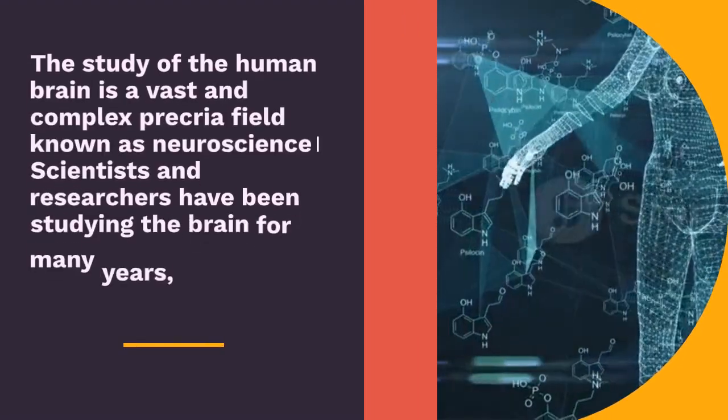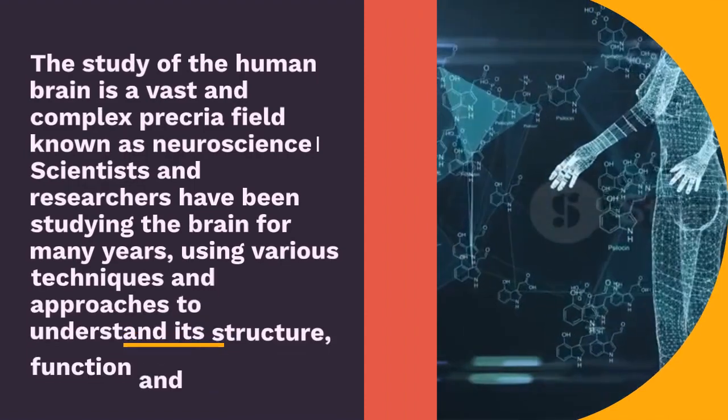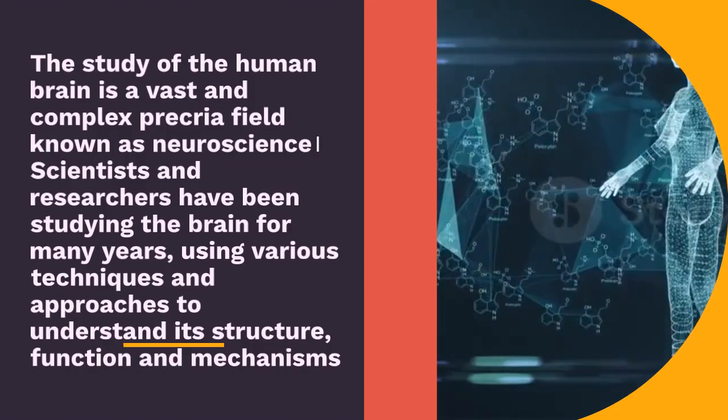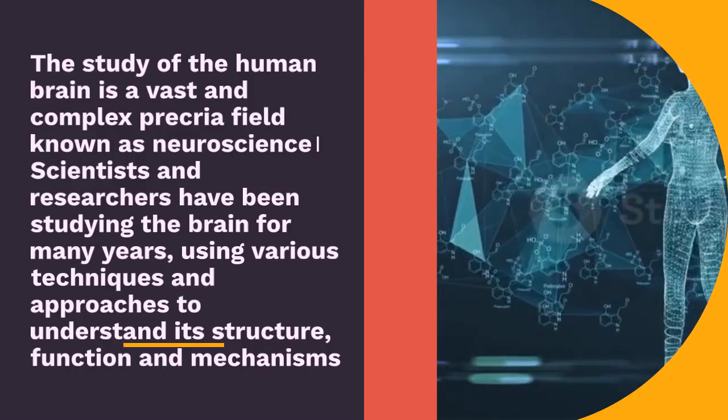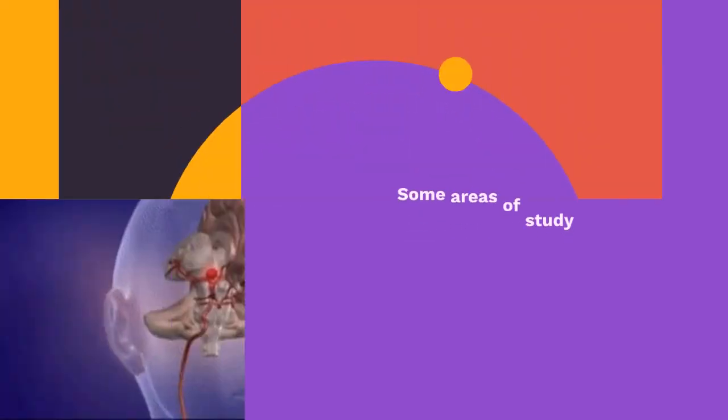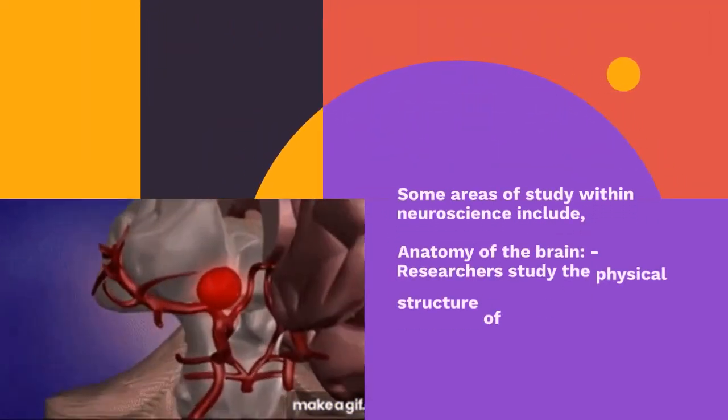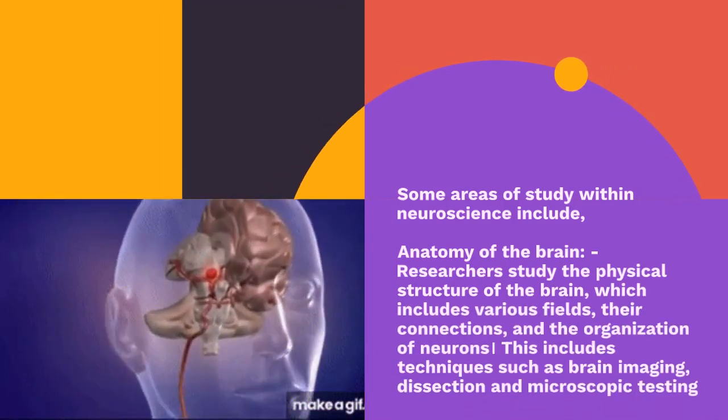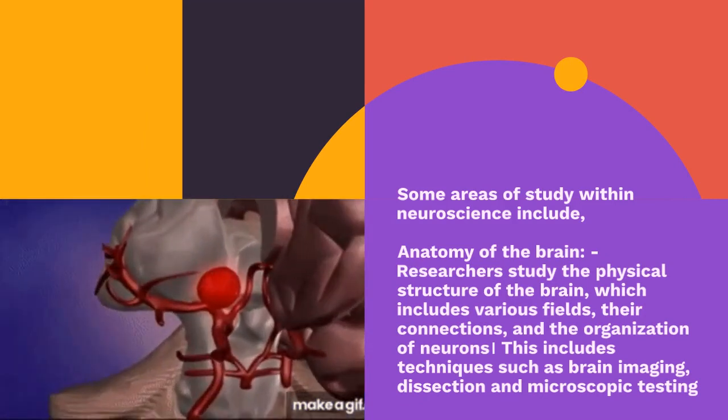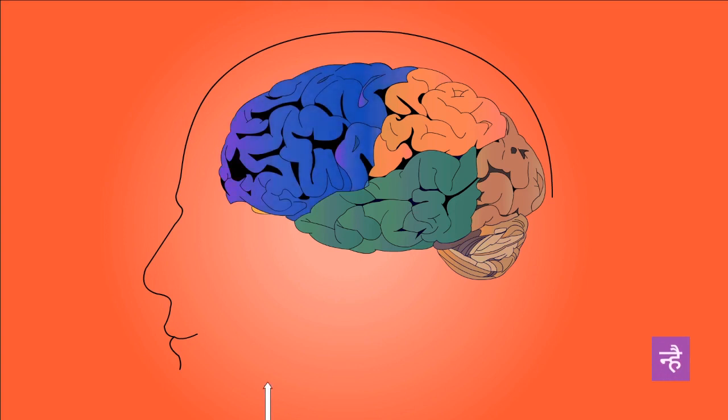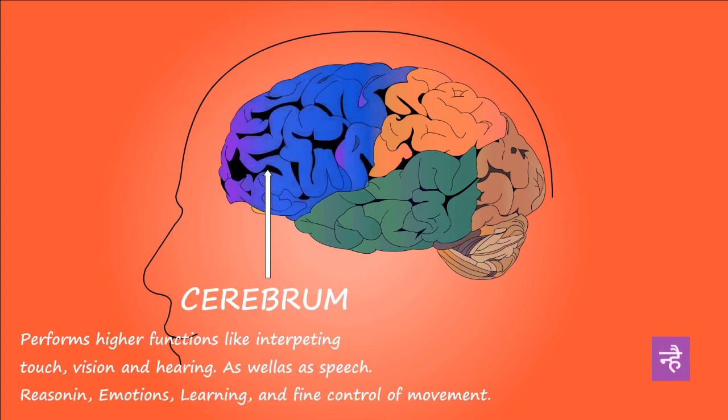The study of the human brain is a vast and complex field known as neuroscience. Scientists and researchers have been studying the brain for many years, using various techniques and approaches to understand its structure, function and mechanisms. Some areas of study within neuroscience include anatomy of the brain: researchers study the physical structure of the brain, which includes various regions, their connections, and the organization of neurons. This includes techniques such as brain imaging, dissection and microscopic testing.